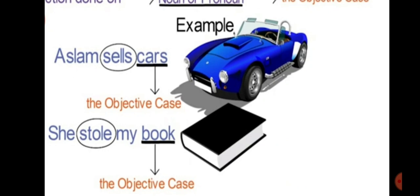'She stole my book.' Here, 'book' is in the objective case. In this example, 'book' is the object on which the action is being done, and that's why the noun 'book' is in the objective case. So a noun or pronoun is in the objective case when an action is being done on it.